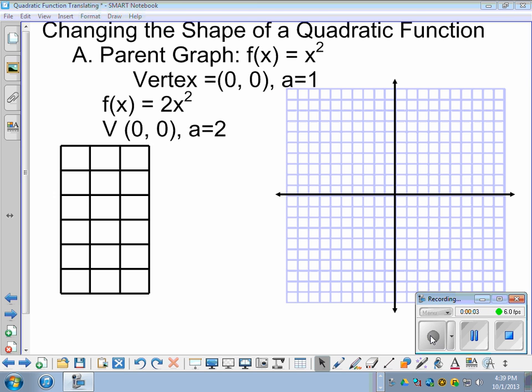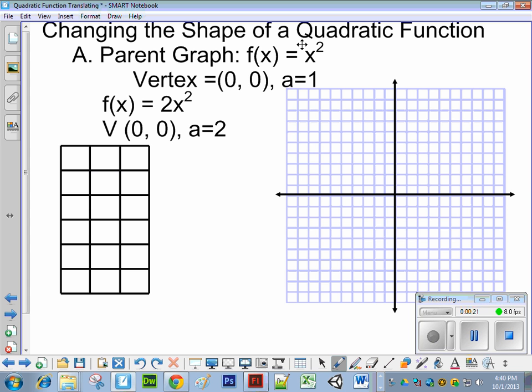Hello, and welcome to a second video tutorial on quadratic function graphing. Today we'll start with the parent graph of f(x) equals x squared. From there we know that the vertex is (0, 0), and the a value, which is the number before x squared, is 1. So this could have said 1x squared.